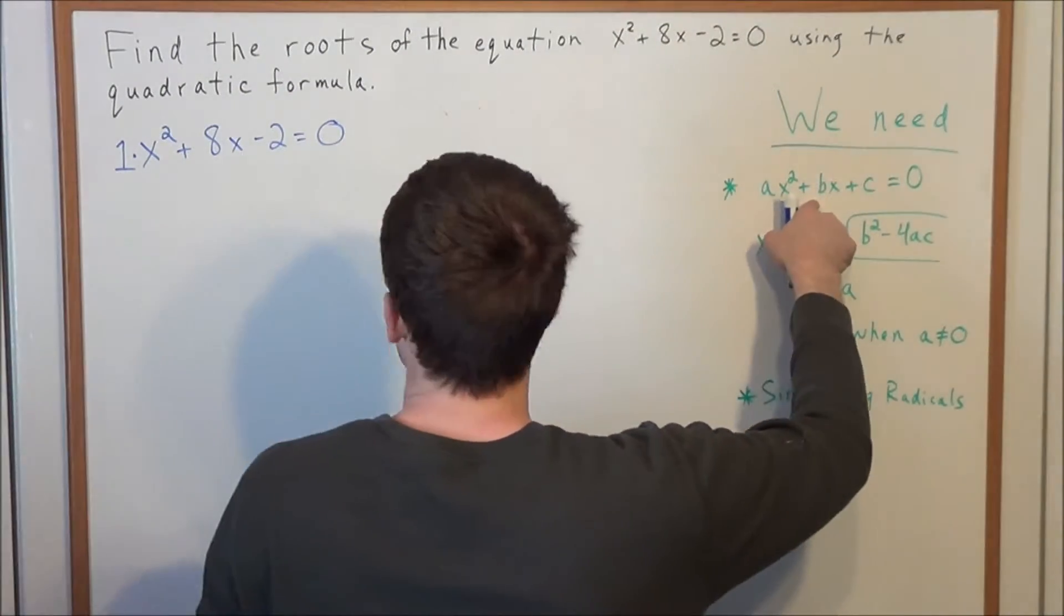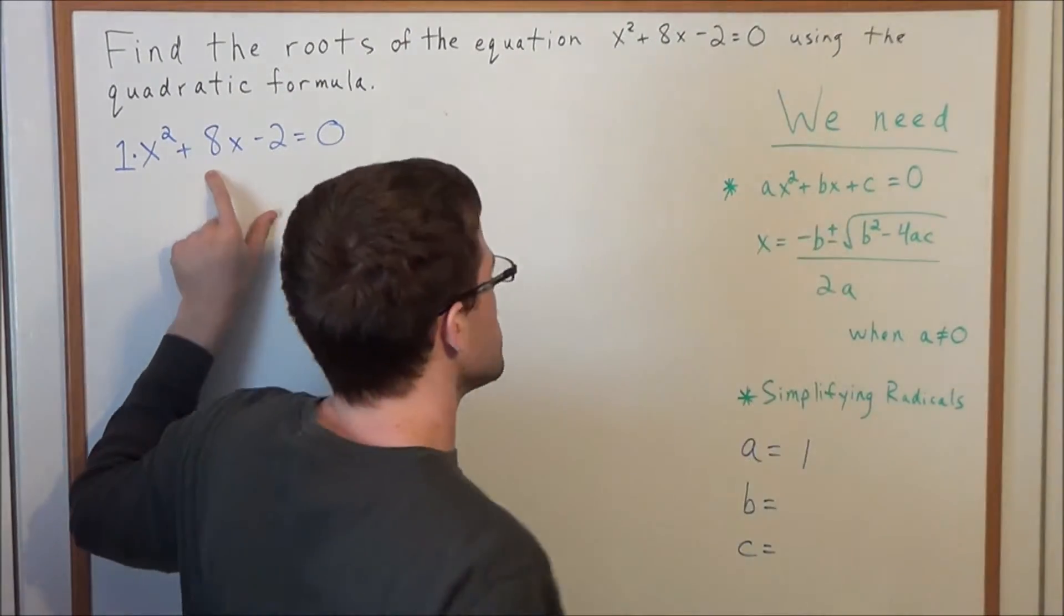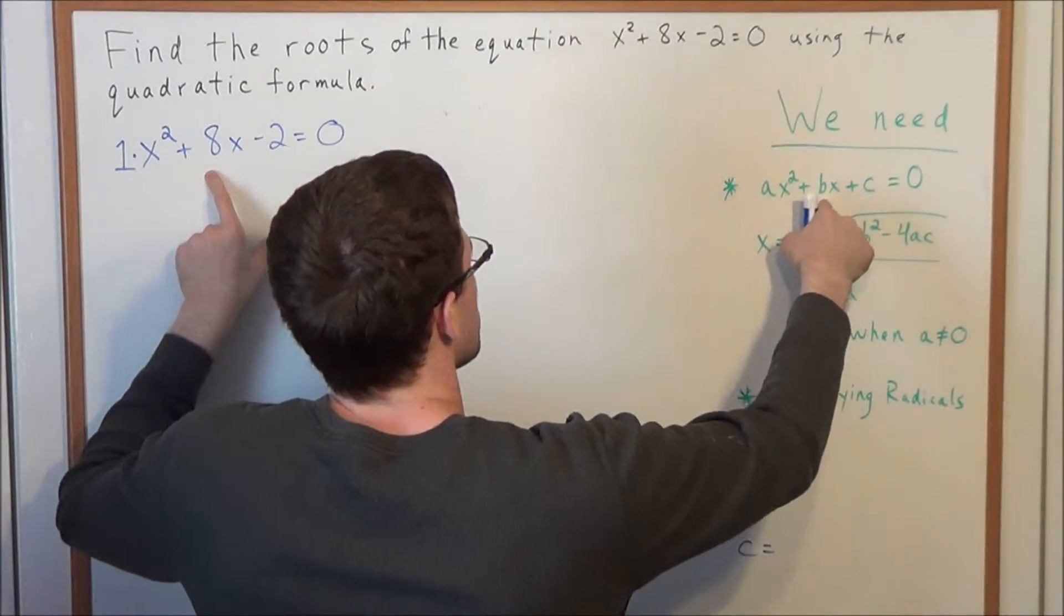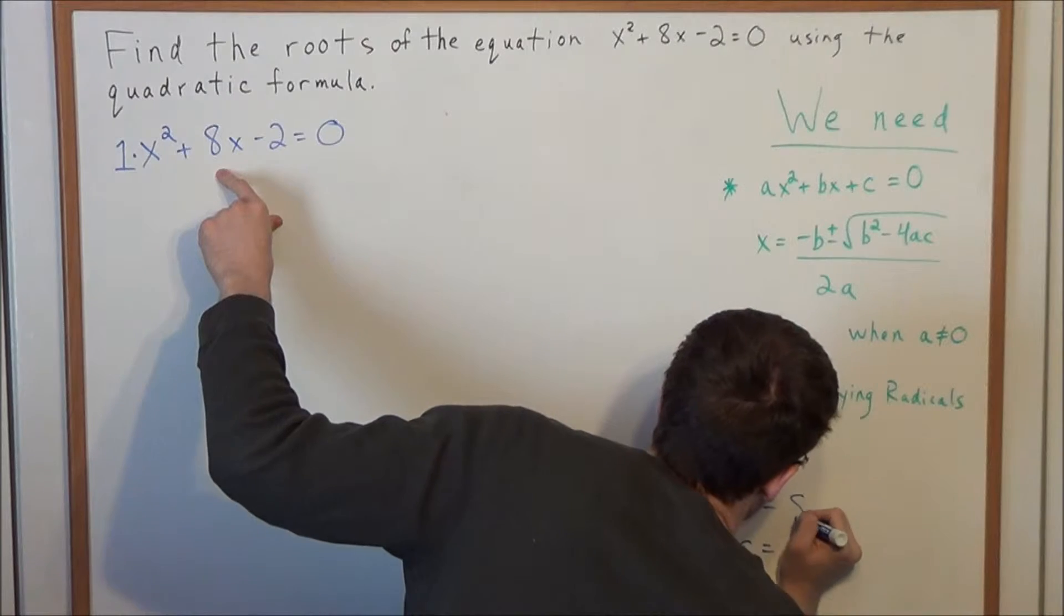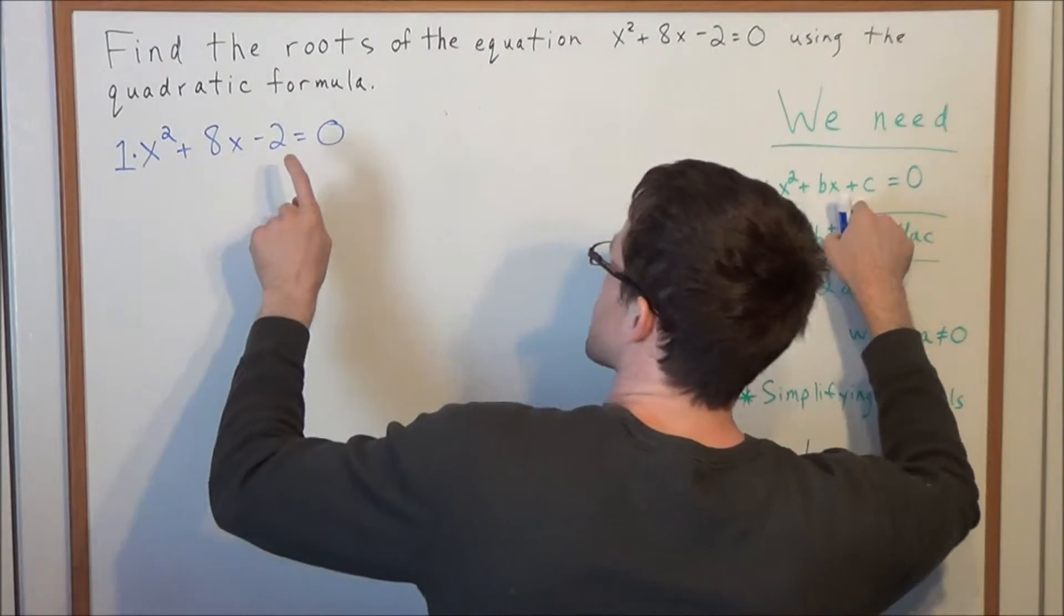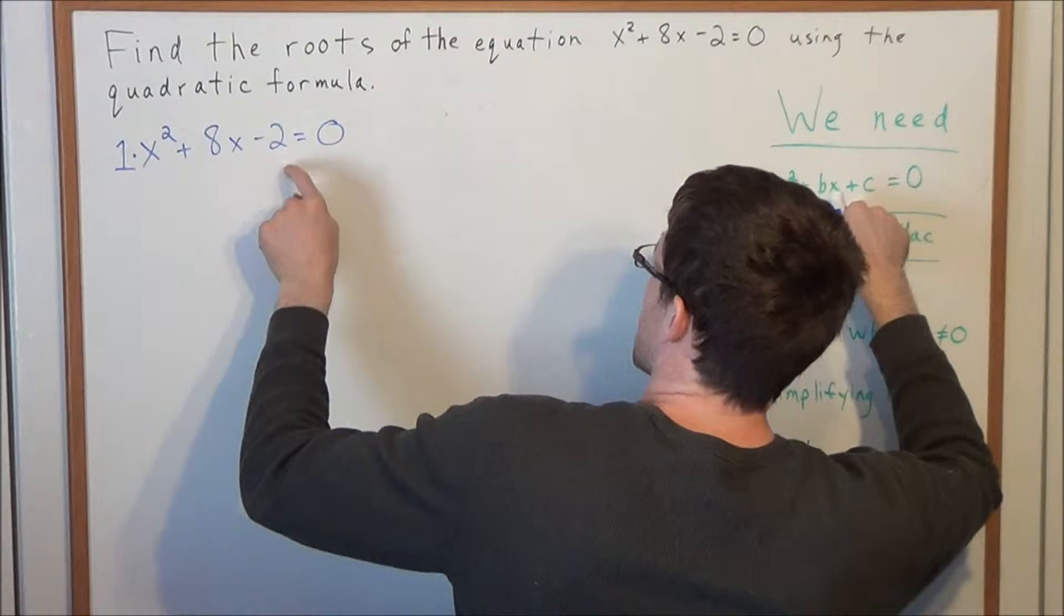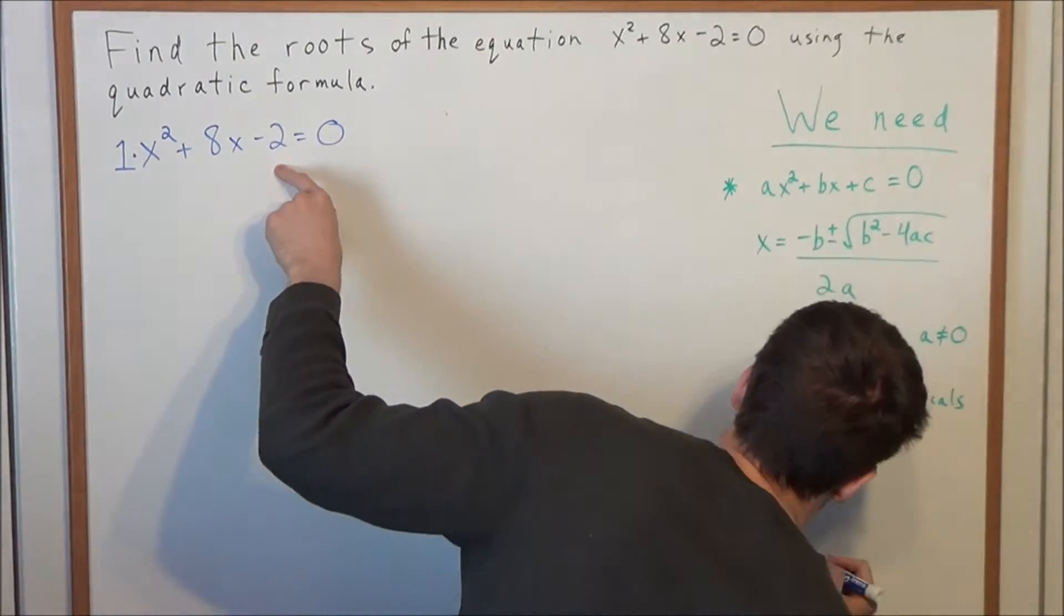Now we move over to the b term. What term is in front of the x piece? Well in this case we have b = 8. And finally we look for c, which is the constant term. The constant term in this case is going to be -2.